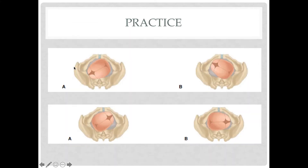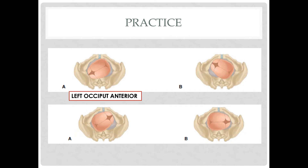In the first practice example, the occipital fontanel is pointing towards the left anterior direction — left is the left side of the mother, and anterior is where the symphysis pubis is. So this will be left occiput anterior. In the next picture, the occipital fontanel is pointing posteriorly to the left, so that would be left occiput posterior.